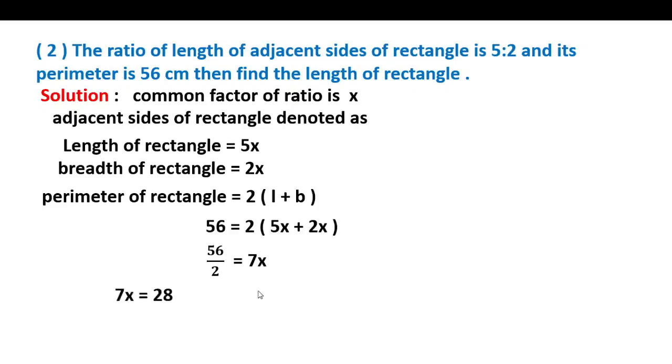So 56 divided by 2 is equal to 28, and we have 7x = 28. Dividing both sides by 7, we get x = 28 divided by 7.